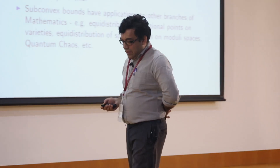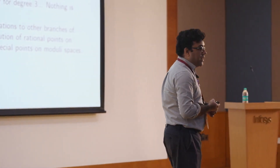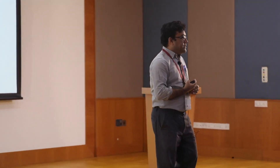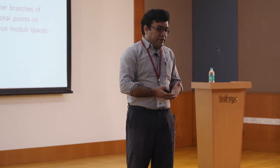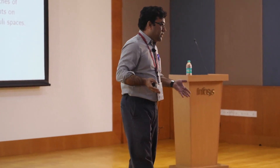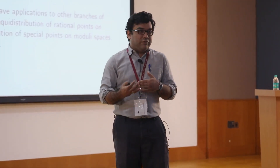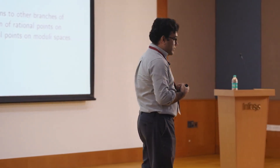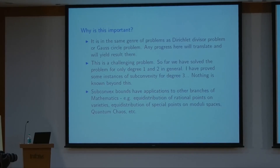Why is the subconvexity problem important? To me it is a central problem in analytic number theory, alongside the Riemann hypothesis. Other central problems include the Dirichlet divisor problem and the Gauss circle problem — which asks how many lattice points lie inside a circle of area x centered at the origin. Progress on subconvexity is linked to these problems, because the tools developed to prove subconvexity can also be applied to improve results on the divisor and circle problems.